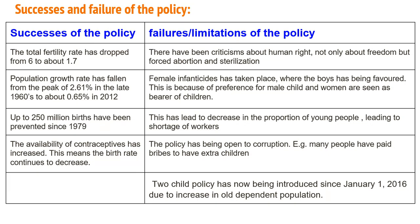The successes of the policy include that the total fertility rate dropped from 6 to around 1.7. The population growth rate fell from a peak of 2.61% in the late 1960s to 0.65% in 2012. Up to 2050, millions of births have been prevented since 1979. The availability of contraceptives has increased, which has helped the birth rate continue to decrease.